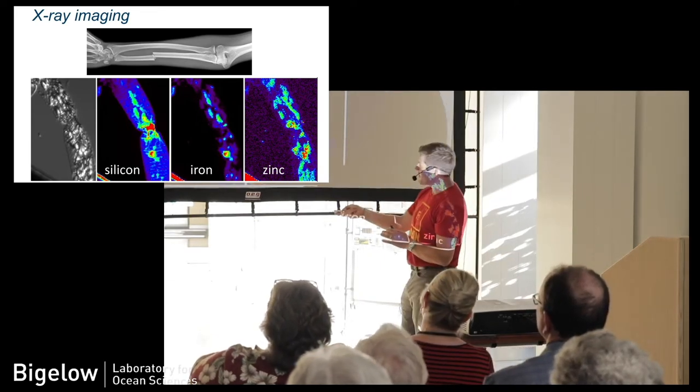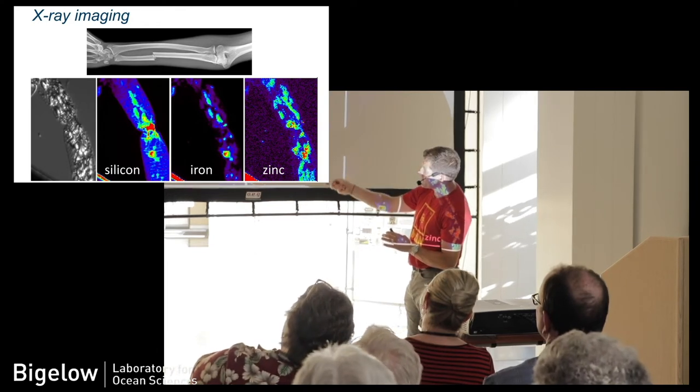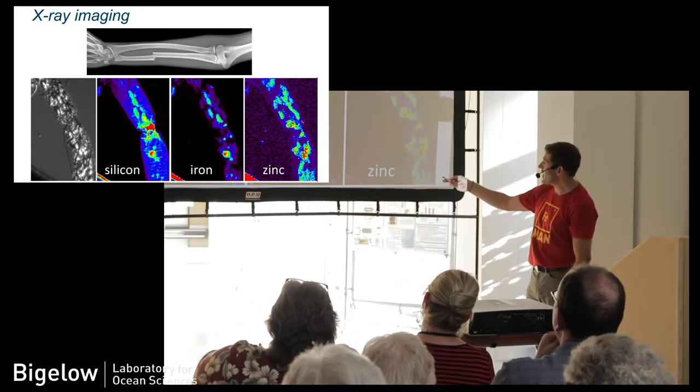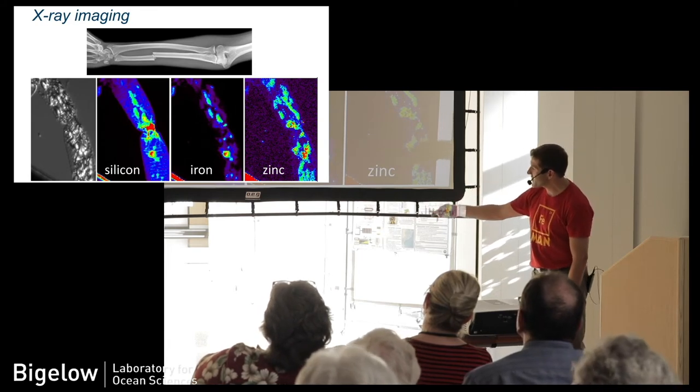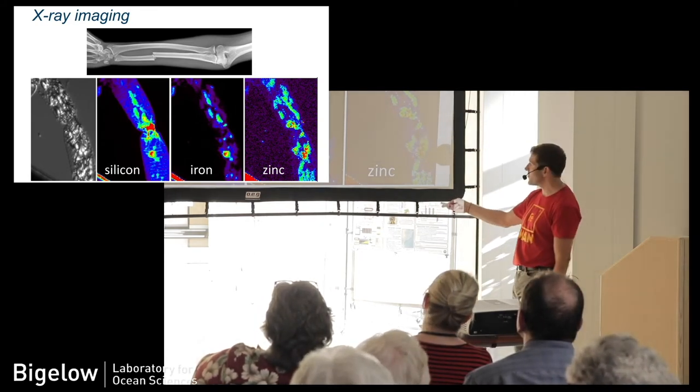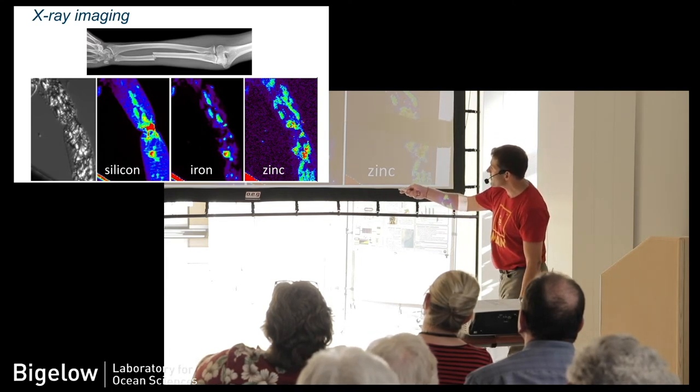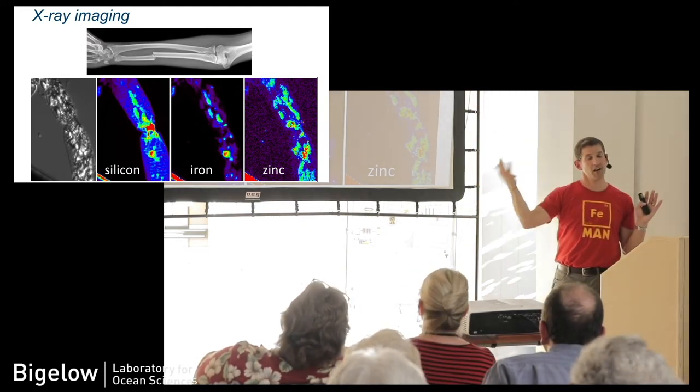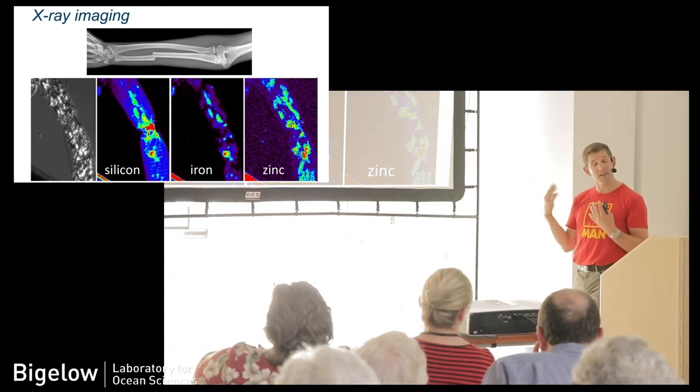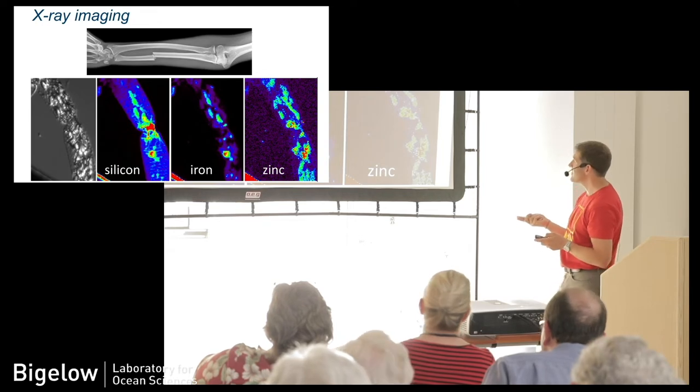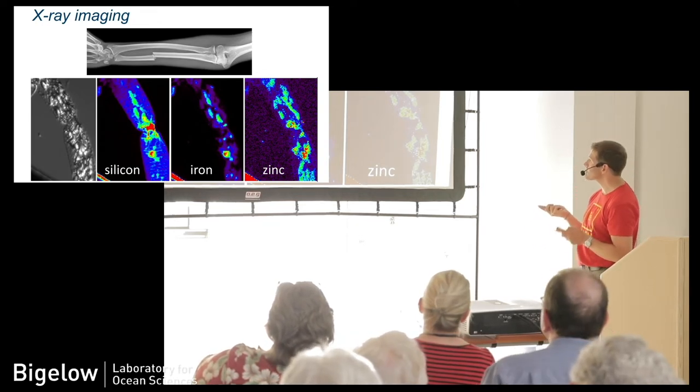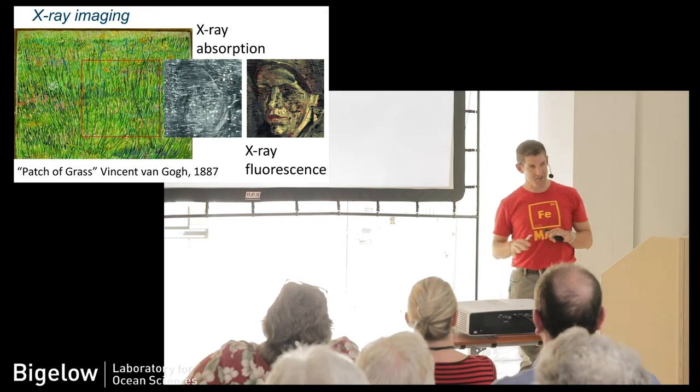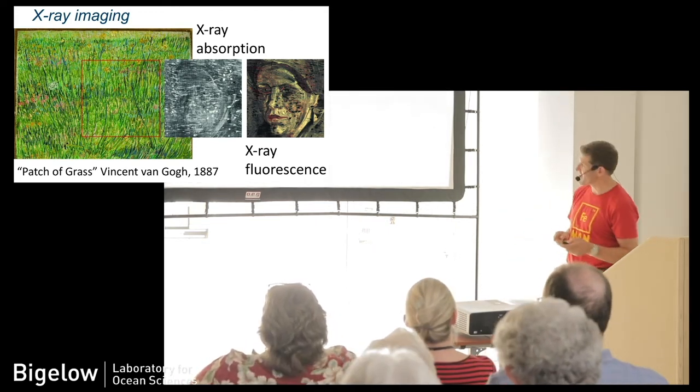This is an example of that. This is a phytoplankton cell, about the size of a human hair. There's two cells here that are attached. When you put it in front of a bright x-ray beam, we're actually able to get maps of the elements that it's comprised of. This is the silicon. It has a glass shell made of opal. This is the iron in it, and then we can get zinc. We actually can get many of the elements. Most of the elements that are contained within these cells, we can actually get a two-dimensional map, and we can quantitatively measure them with this technique.